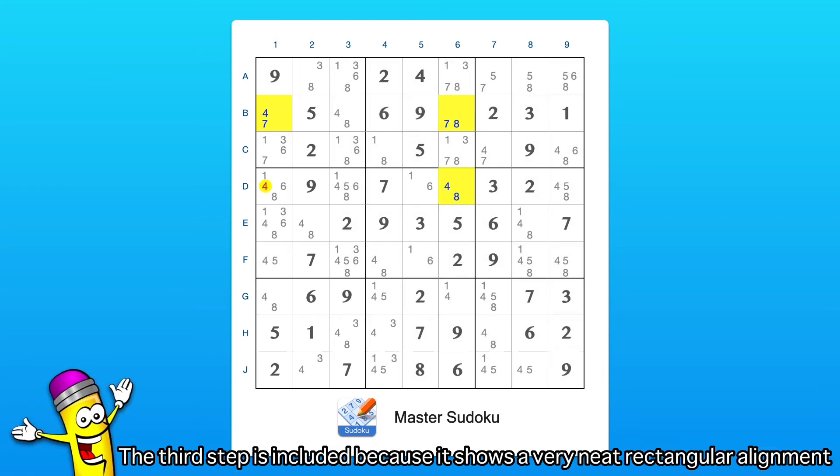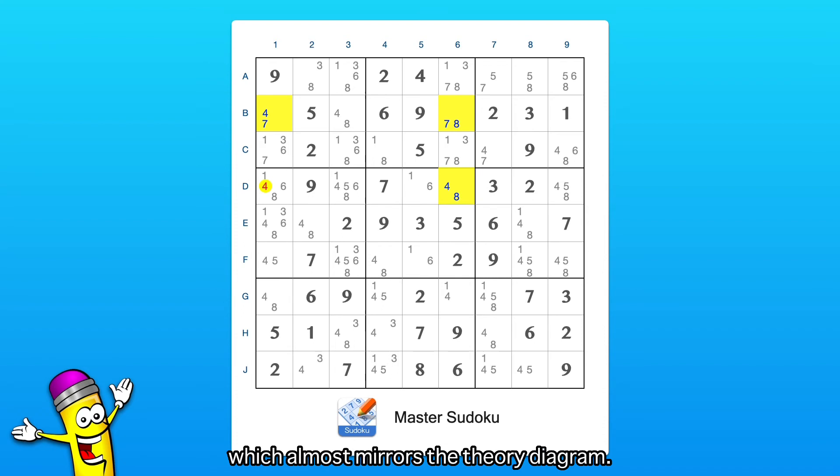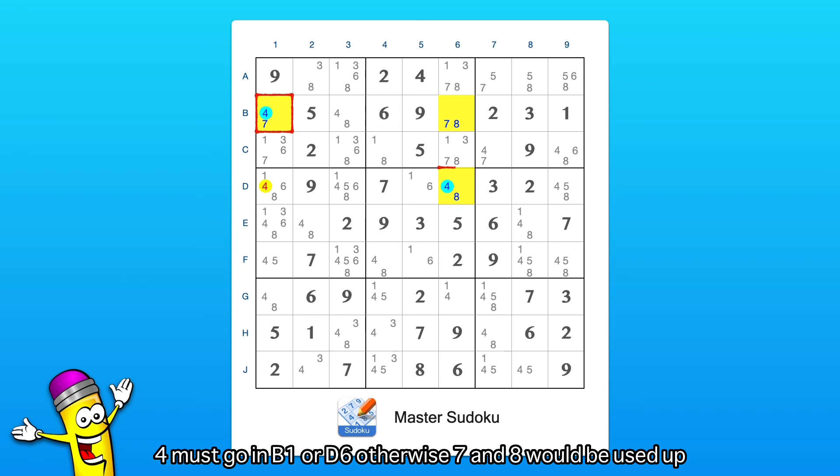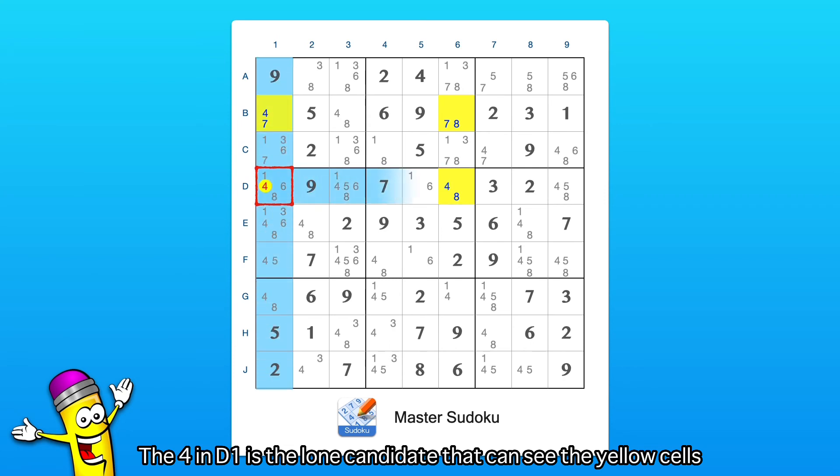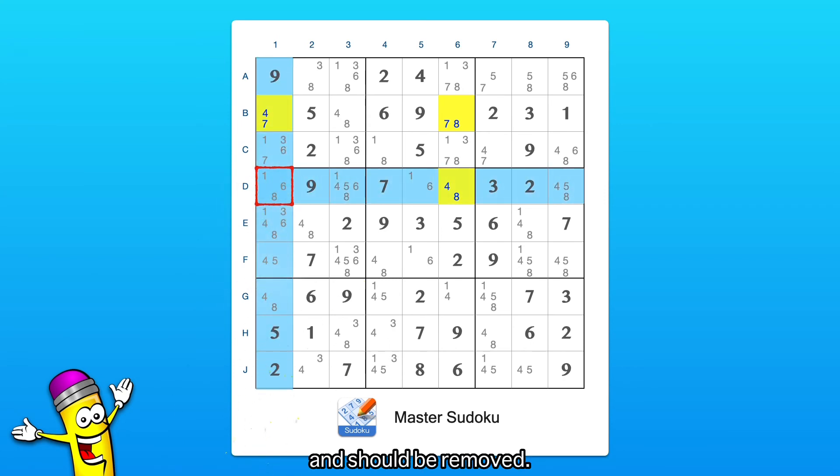The third step is included because it shows a very neat rectangular alignment, which almost mirrors the theory diagram. You couldn't ask for a clearer example. 4 must go in B1 or D6, otherwise 7 and 8 would be used up and there'd be nothing to go in B6. The 4 in D1 is the lone candidate that can see the yellow cells and should be removed.